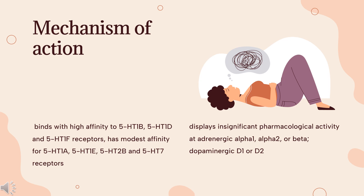Mechanism of Action. Migraines are complex physiological events characterized by unilateral throbbing headaches combined with photophobia and other aversions to sensory input. Migraine attacks are generally divided into phases: the premonitory phase, which typically involves irritability, fatigue, yawning, and stiff neck; the headache phase, which lasts for between 4 and 72 hours; and the postdrome phase, which lasts for up to a day following resolution of pain and whose symptoms are similar to those of the premonitory phase.